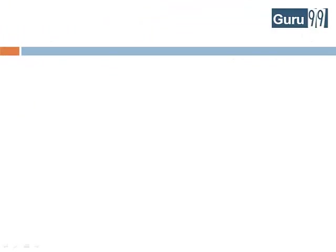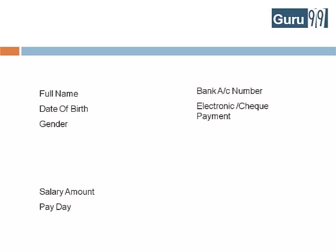I am sure you did a good job in determining the details. You will need information like name, date of birth, and gender, since tax computation will depend on your age and sex. You will also need the salary amount and the payday information. Also, you will need bank information. You will need address information, since tax computation depends on your location. These are just a very few of the hundreds of pieces of information that you need to compute payroll or perform any other HR related activity.